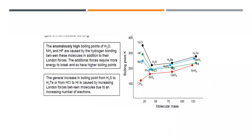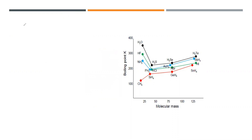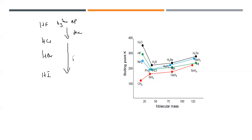The same thing applies when we check group seven hydrides. The trend is: hydrogen fluoride is there, then hydrogen chloride, then hydrogen bromide, then hydrogen iodide. Hydrogen fluoride will have the higher boiling point. Moving from hydrogen fluoride to hydrogen chloride, the boiling point decreases. Moving from hydrogen chloride to hydrogen bromide and iodide, it increases. What kind of force is in hydrogen fluoride? It will be a hydrogen bond. What is the force in hydrogen chloride? It will be dipole-dipole.